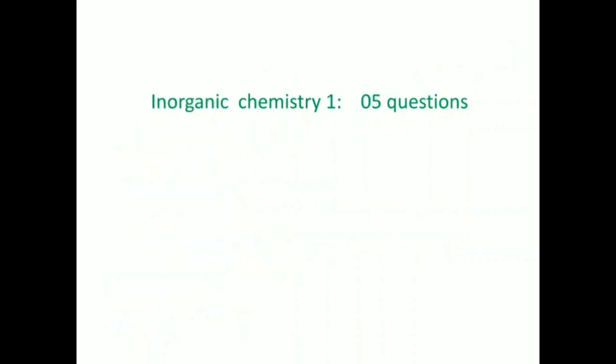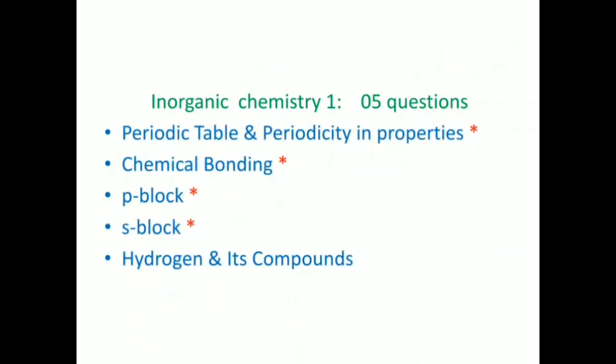In Inorganic Chemistry 1, we get five questions. You have a list of around five topics, out of which hydrogen and its compounds are less important compared to the other four. So you have to focus more on the asterisk-marked topics.